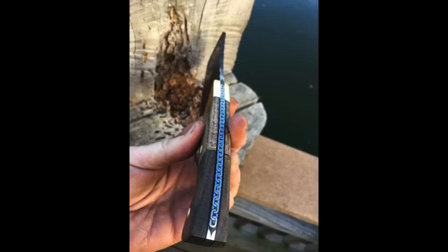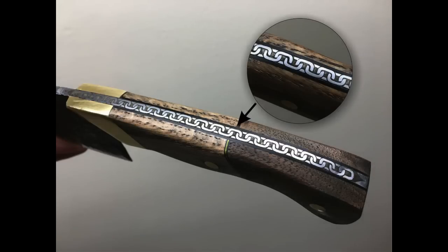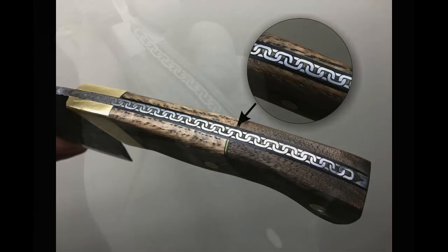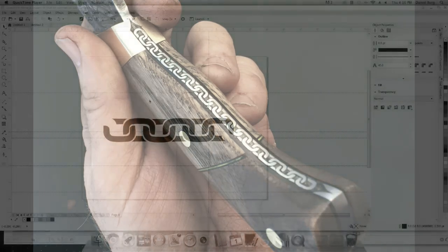Now, these were all etched onto three-sixteenths thick 1095 high-carbon steel. And it really is a very simple process. A little time-consuming, but it's not difficult at all.